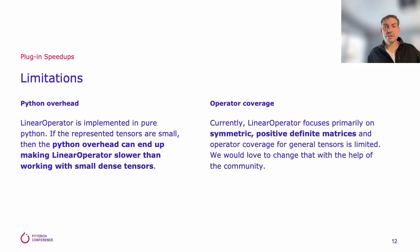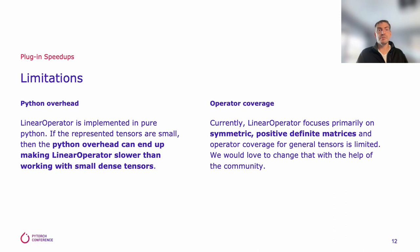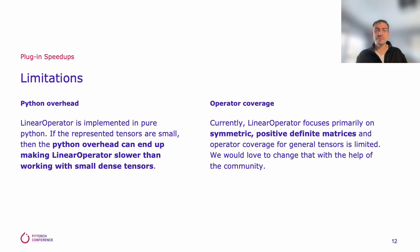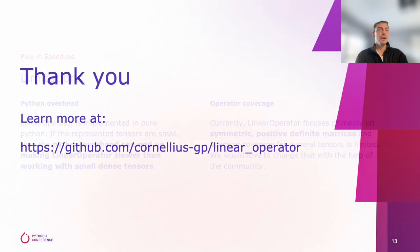So what's the catch? There are two main ones currently. The first is that Linear Operator is written in pure Python, so if the involved tensors are very small, it may just be faster to use dense torch tensors. The second is that the main focus so far has been on symmetric positive definite matrices, which are used in kernel methods such as Gaussian processes — where some of this package has its origins. There's no real technical reason for this; it's just a matter of doing it, and it would be great to get some help from the community.